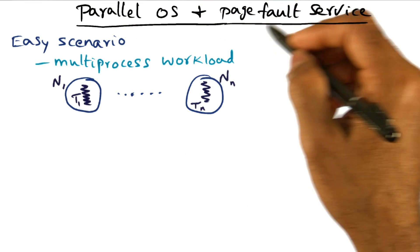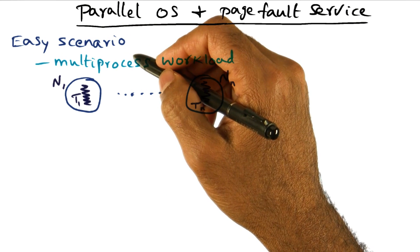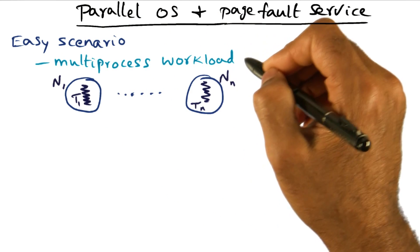If we look at the parallel operating system and page fault service, the easy scenario for the parallel operating system is what I'll call a multiprocess workload.